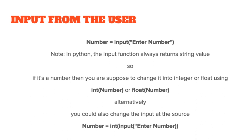Now let's look at getting data into a program from a user using an input statement. In a number variable we use the input statement, and whatever value the user types in is assigned to that variable. In Python, the input function always returns a string value, so if it's a number you need to change it to an integer or float using int(number) or float(number). Alternatively, you could change it at the source: num = int(input('...')). The prompt inside the bracket helps the user know what they're entering.